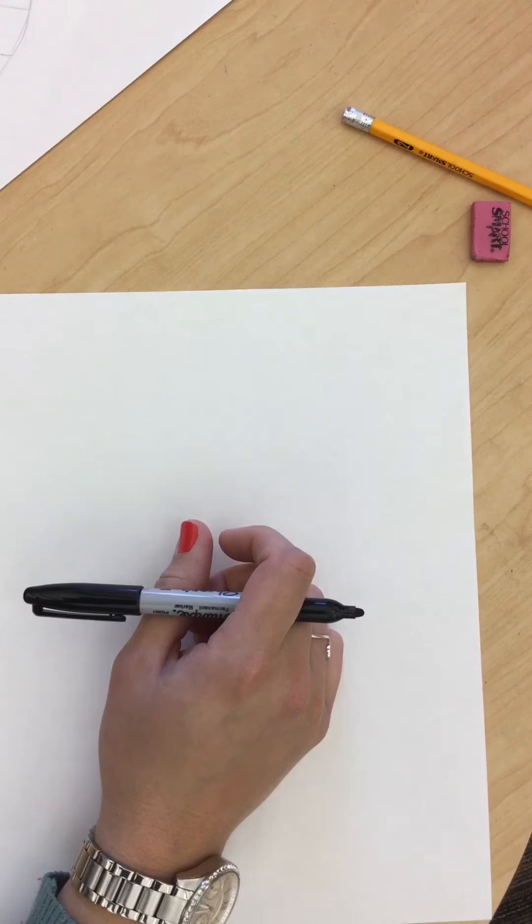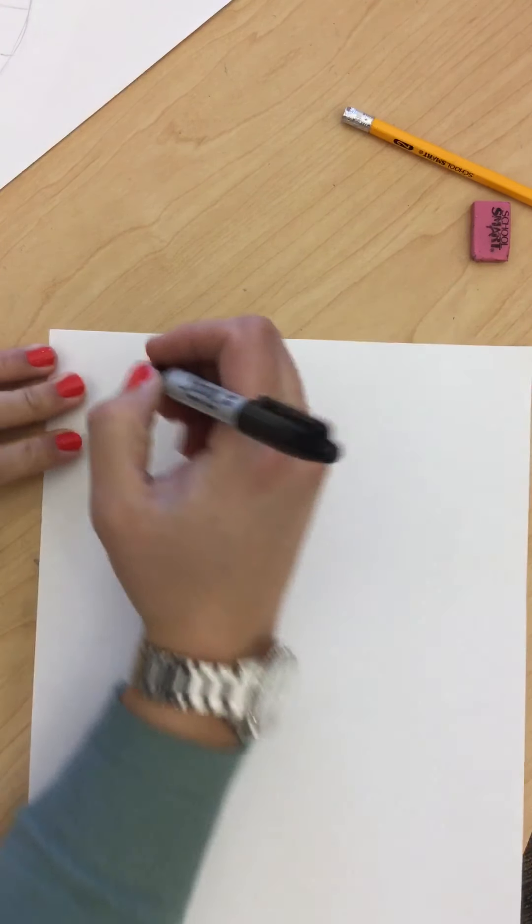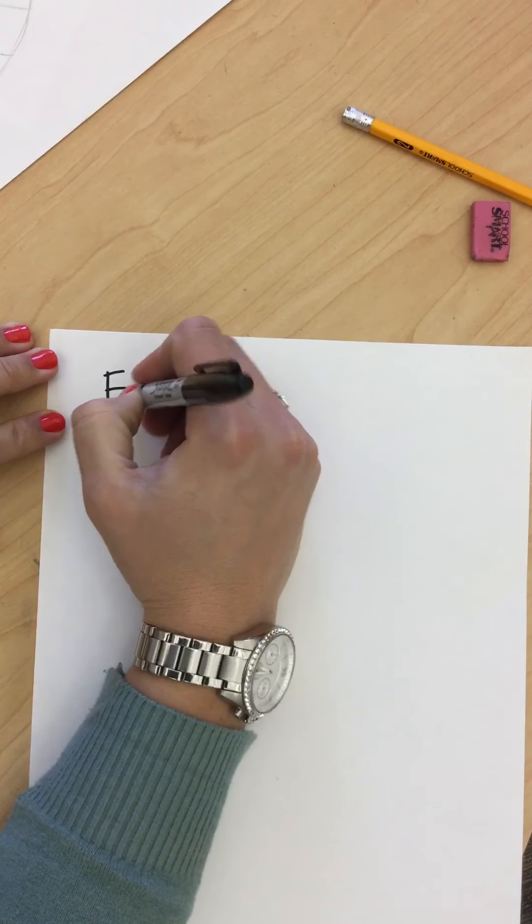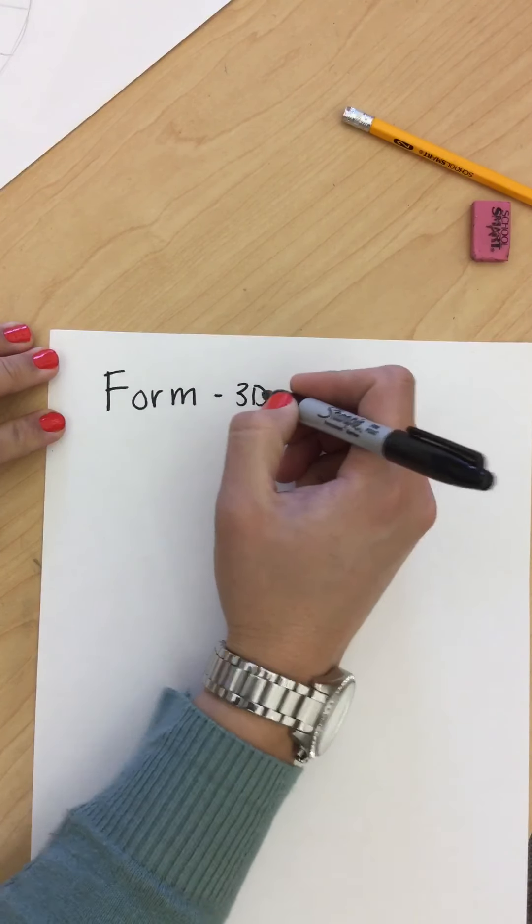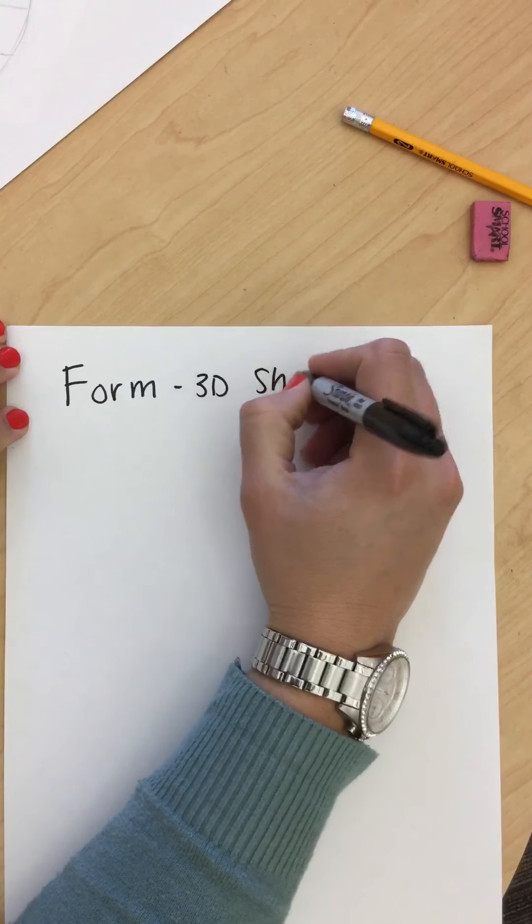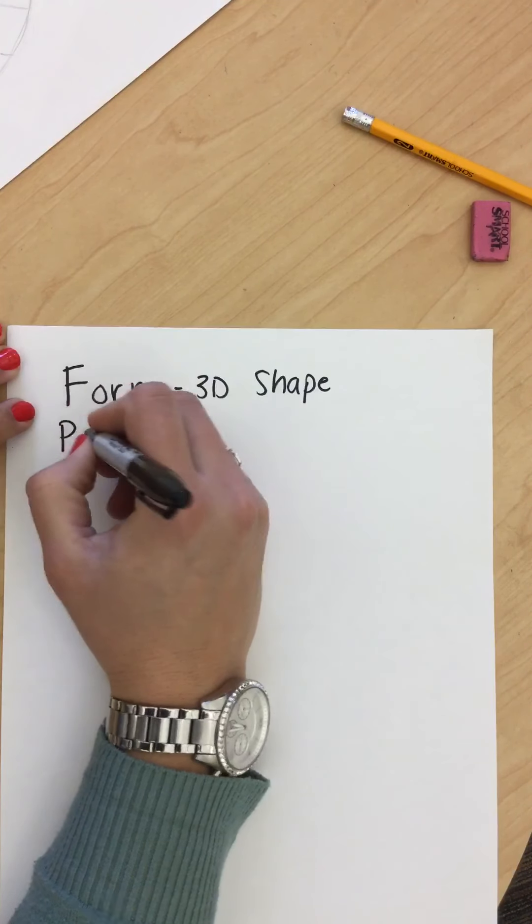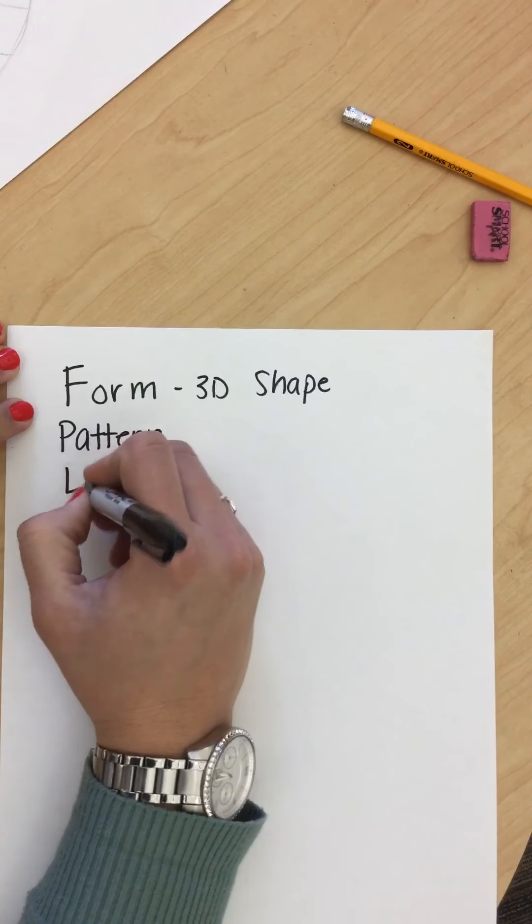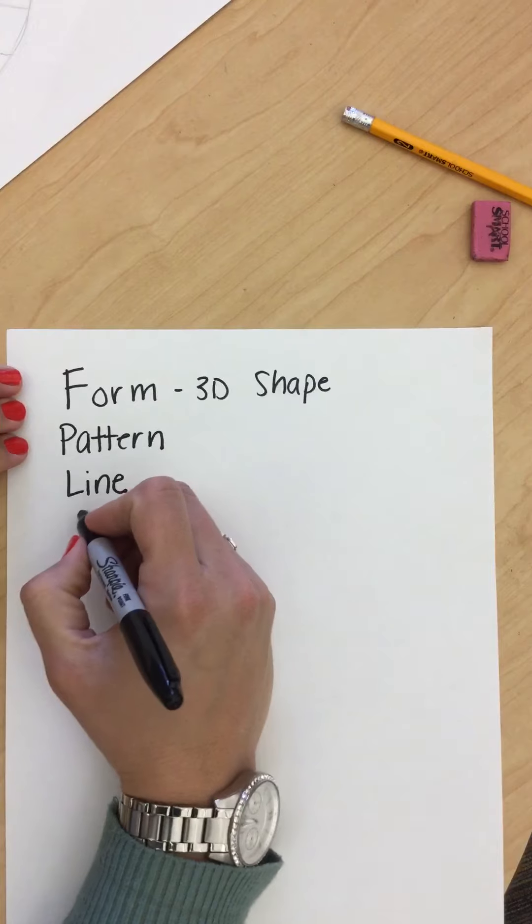We'll go over them before we actually start the lesson in class together, but these are the ones we're going to focus on. We're going to focus on form, which is a 3D shape. We're going to focus on pattern, line, and lines that form pattern.